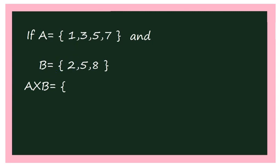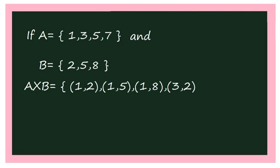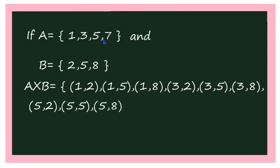Start with the first element of A and pair it with all elements of B one by one, then move to the next element of A. So A cross B = {(1,2), (1,5), (1,8), (3,2), (3,5), (3,8), (5,2), (5,5), (5,8), (7,2), (7,5), (7,8)}.